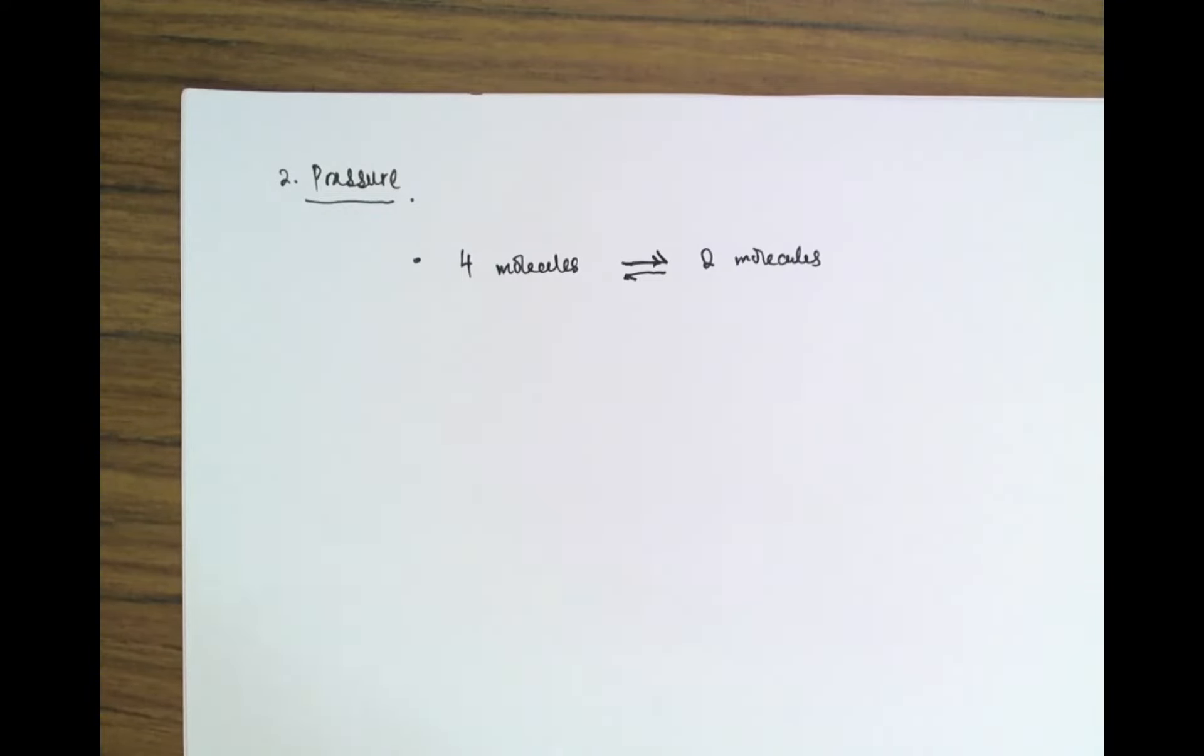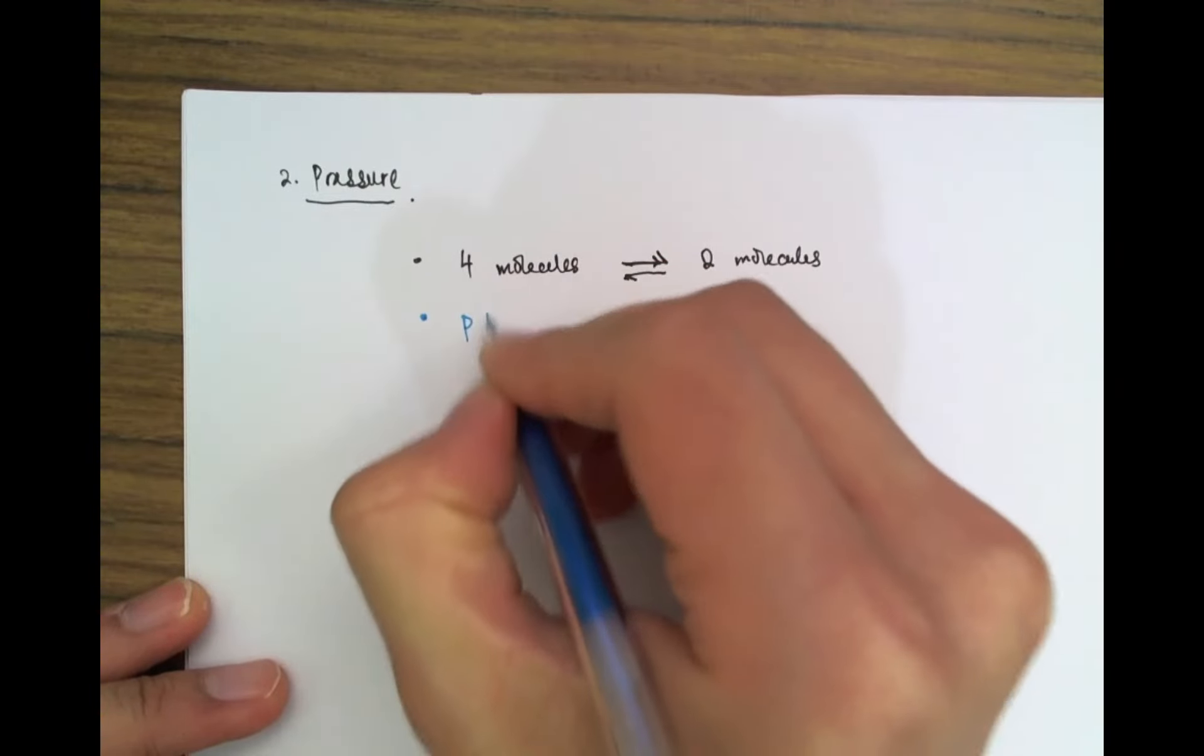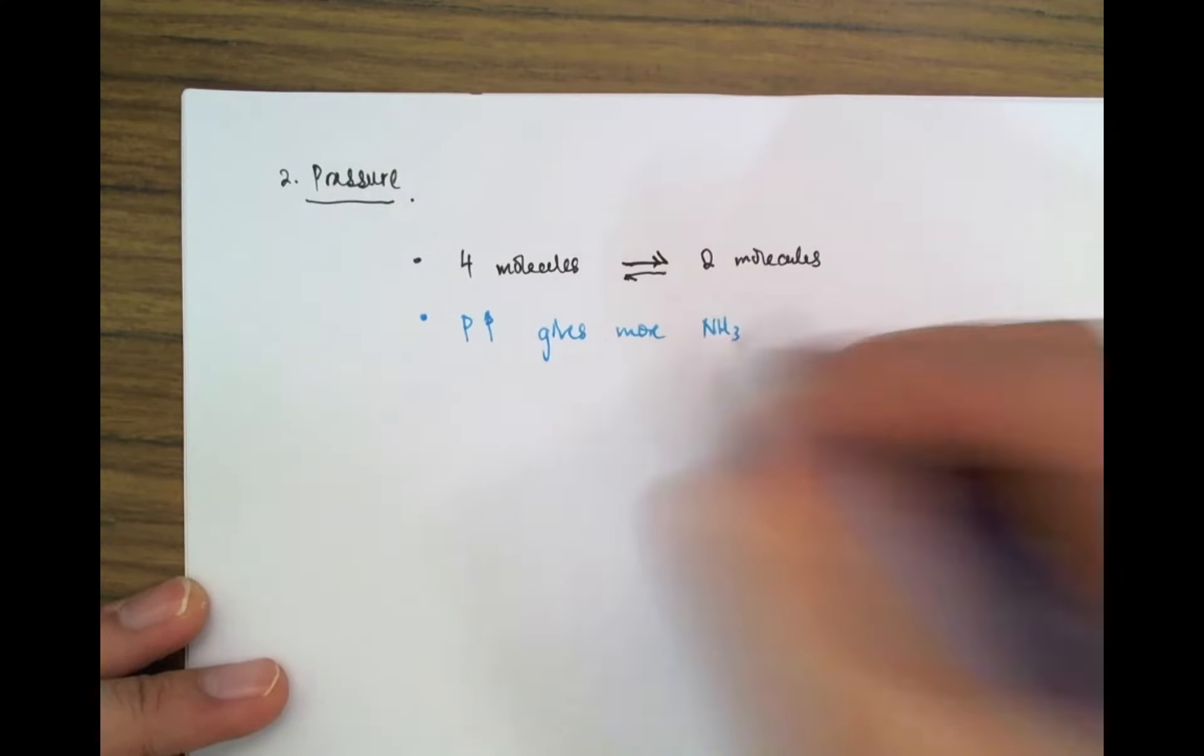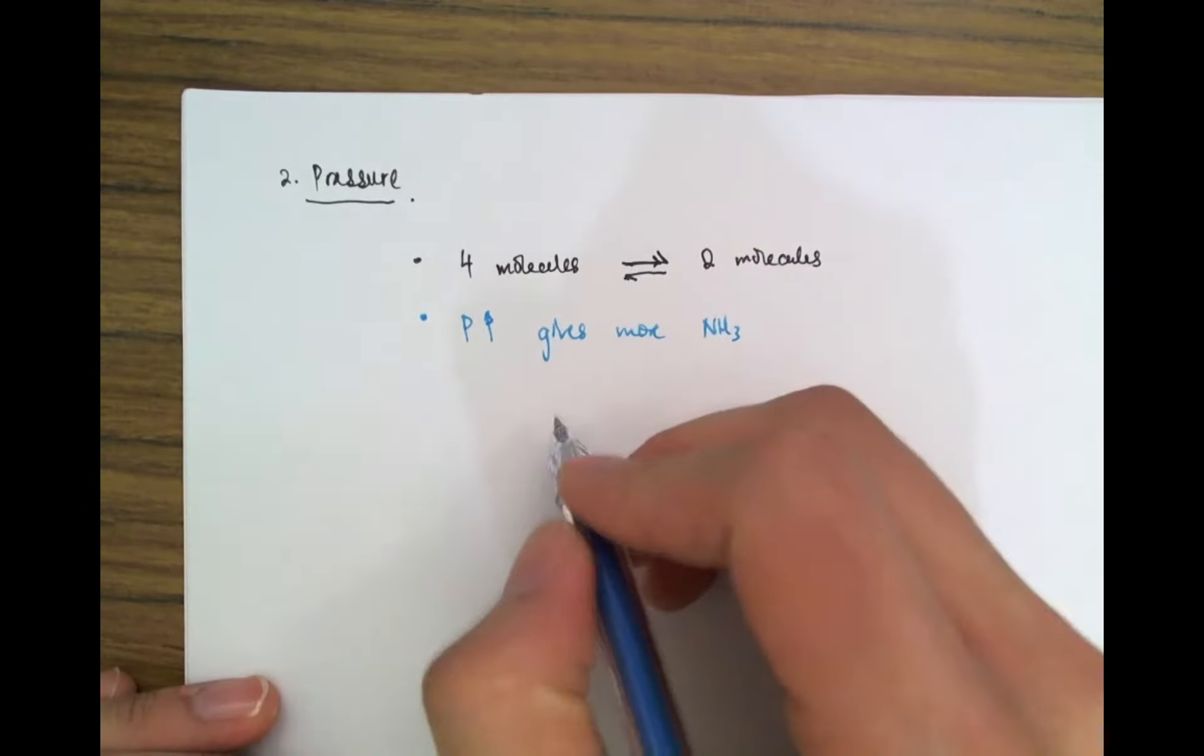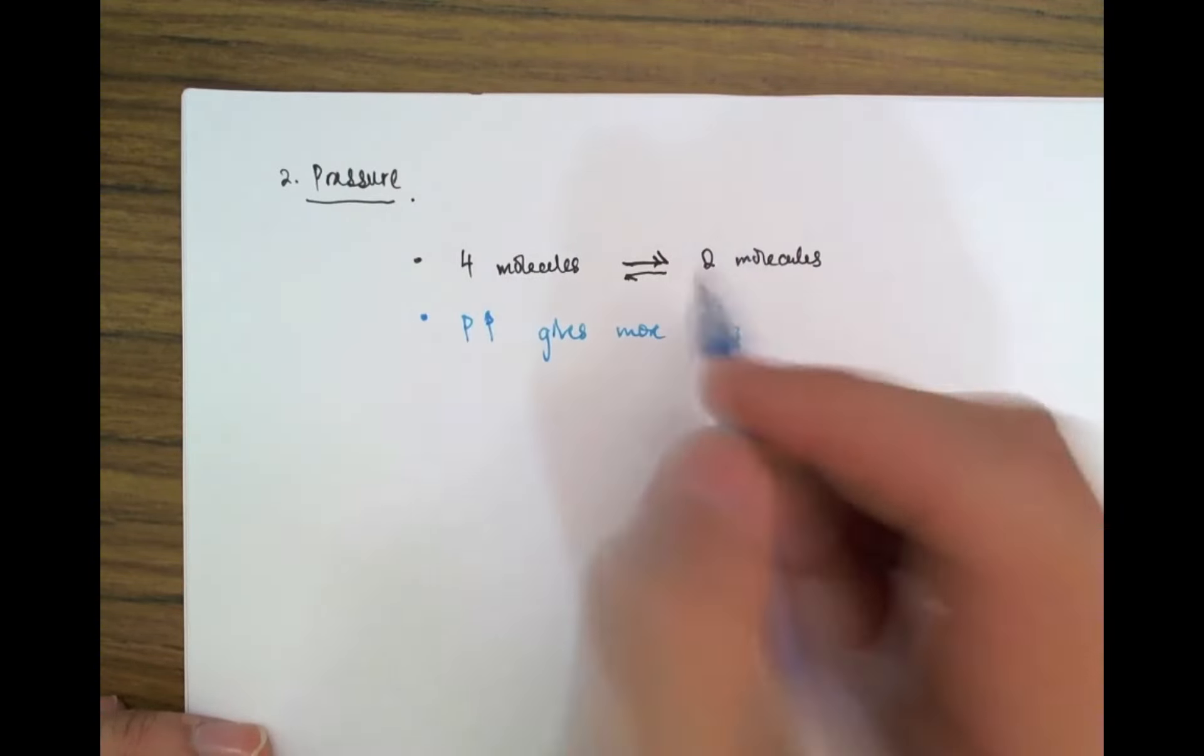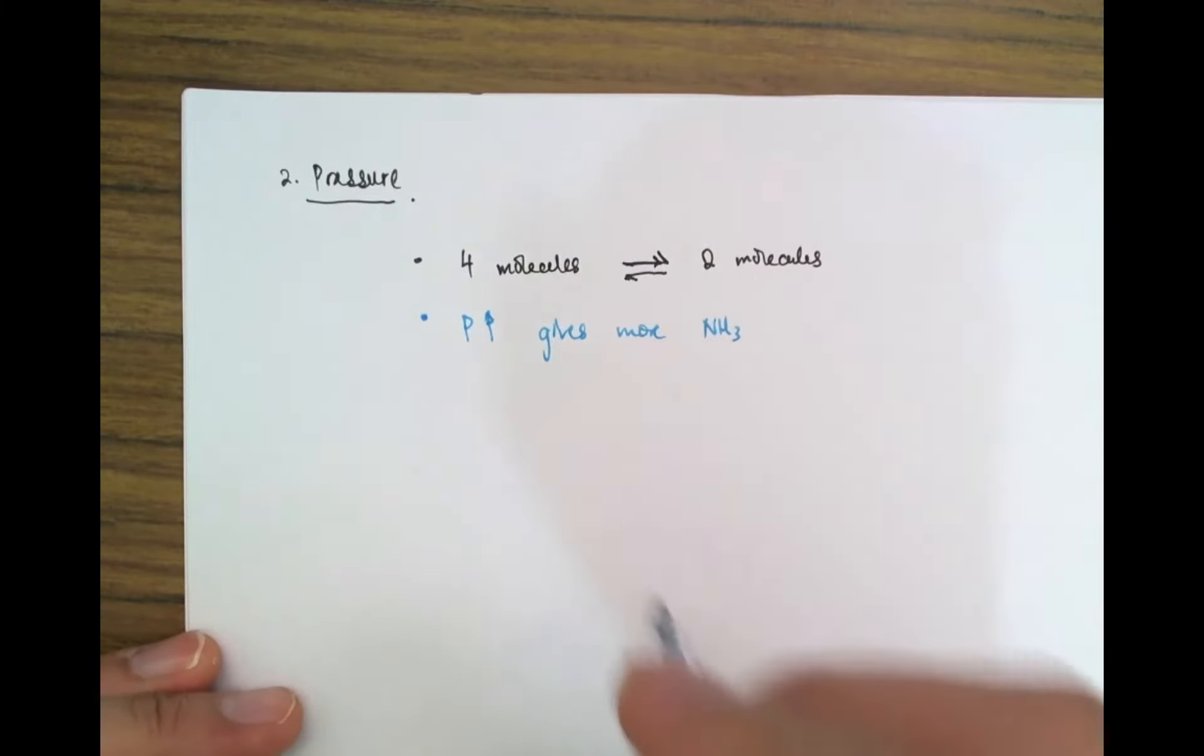So it turns out that what happens is when you increase the pressure, you get a greater yield of ammonia. Now, why would that be? Well, if you recall, what happens is that on the left side, we actually have a higher pressure than on the right side, because there's more molecules here, and there are less molecules here. So we have less molecules hitting the walls here at the same kinetic energy, therefore less force is imparted to the walls, and less pressure.